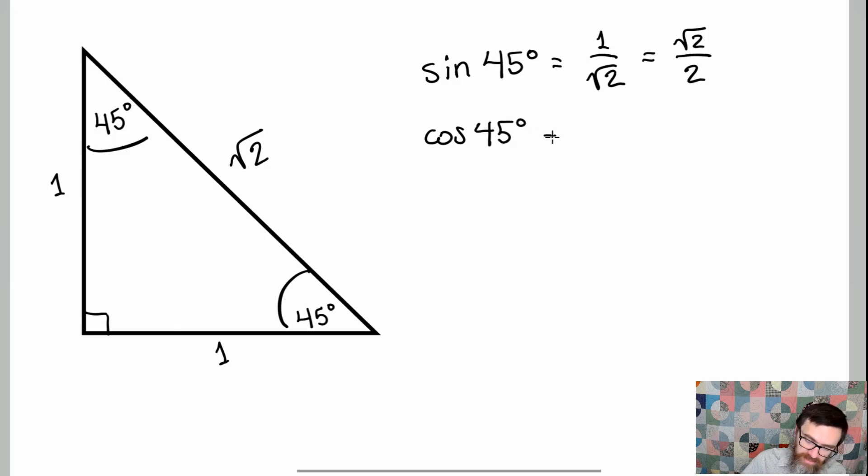Now interestingly enough, isn't cosine supposed to be the sine of its complement? And the complement of 45 is 45, so this guy will also be the square root of 2 over 2. What do you know?